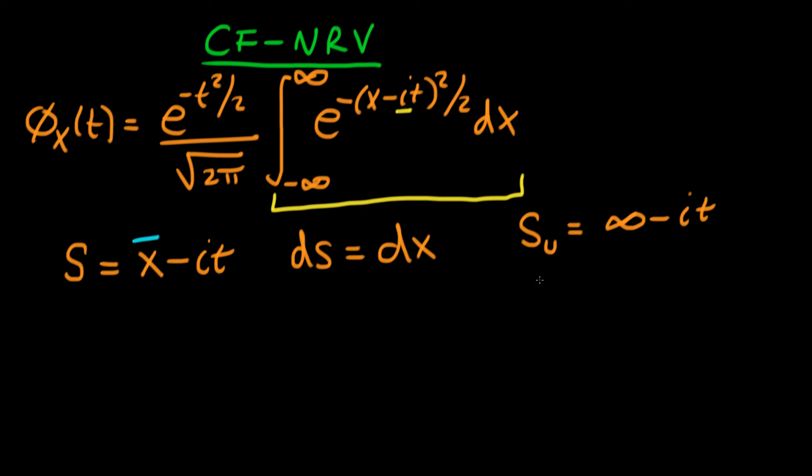And then the lower bound of the integral is just going to be equal to minus infinity minus it. If we do all that and we just substitute in for s rather than our x, we're going to have the characteristic function is equal to e to the minus t squared over 2.